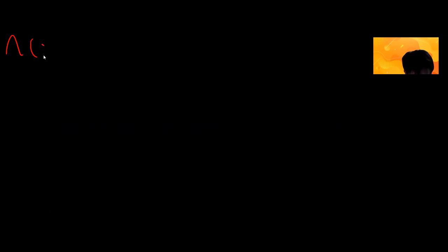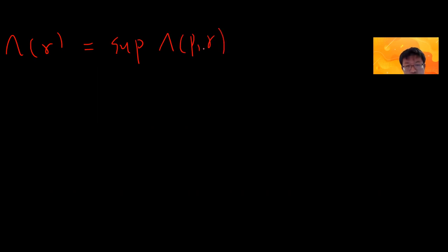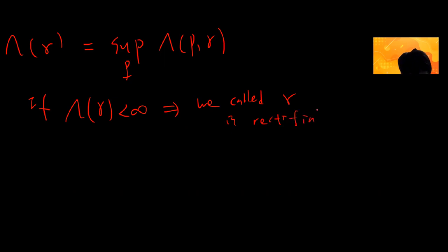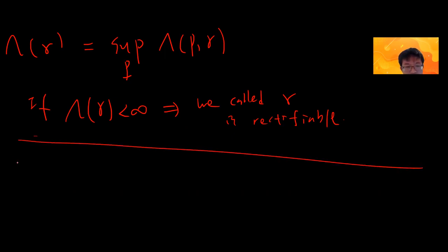Now define lambda of gamma to be the supremum of lambda(P, gamma) over all partitions P. Given a partition, you compute lambda — this is a number — and you take the supremum over all partitions. If this supremum is finite, we call the curve rectifiable.